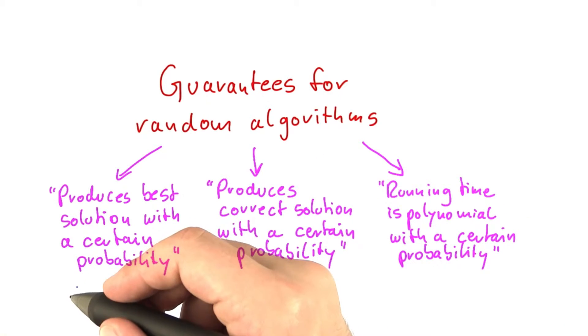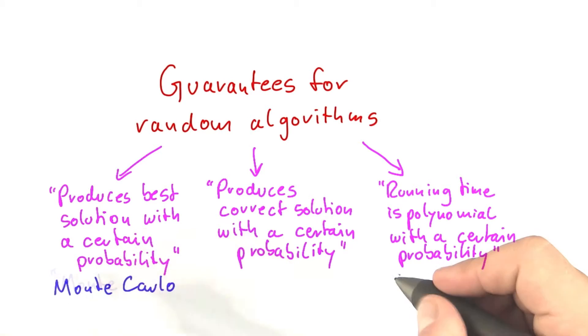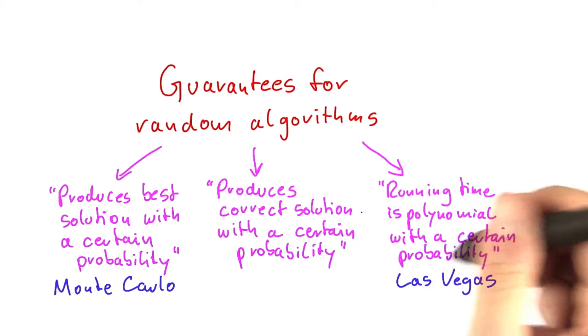Now some of these approaches have special names. This one here is known as a Monte Carlo algorithm, and this one here is known as a Las Vegas approach. Don't ask me what that says about casinos in Europe versus casinos in America because I have no clue.